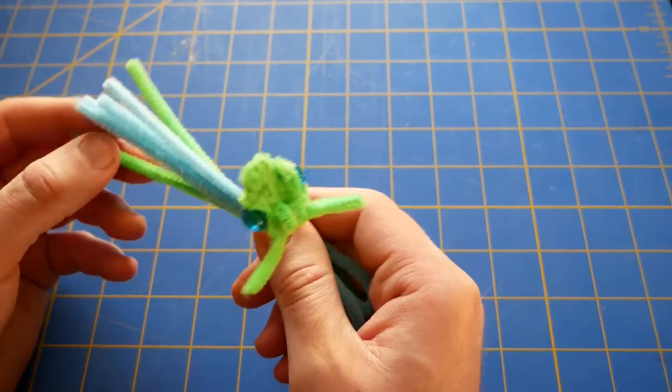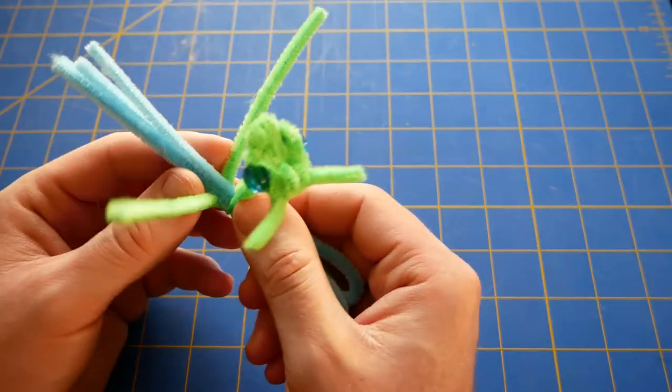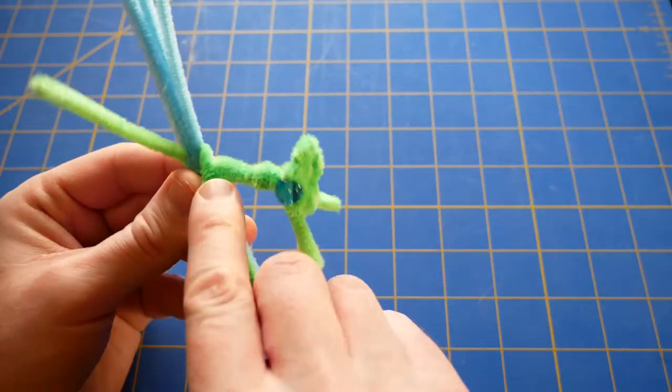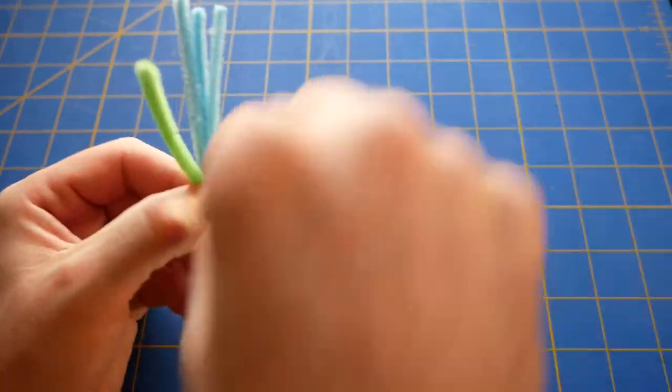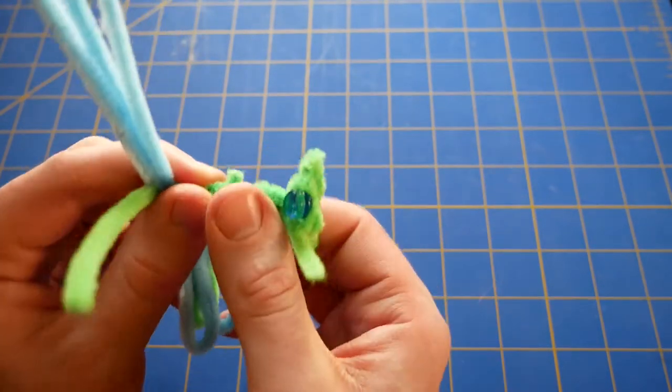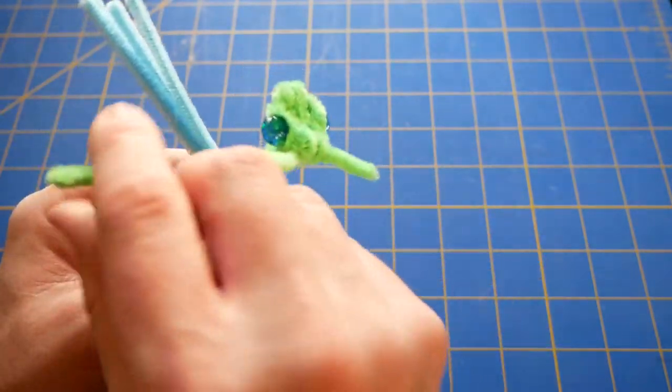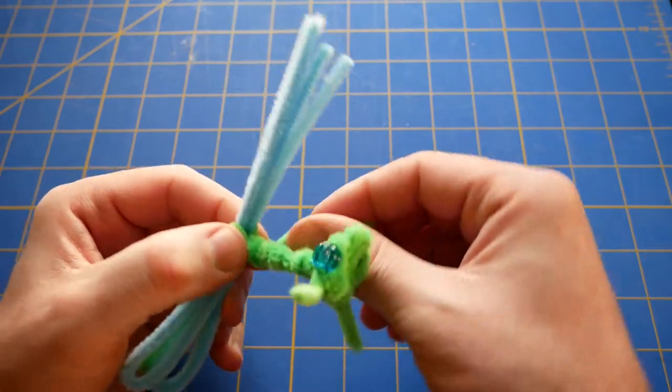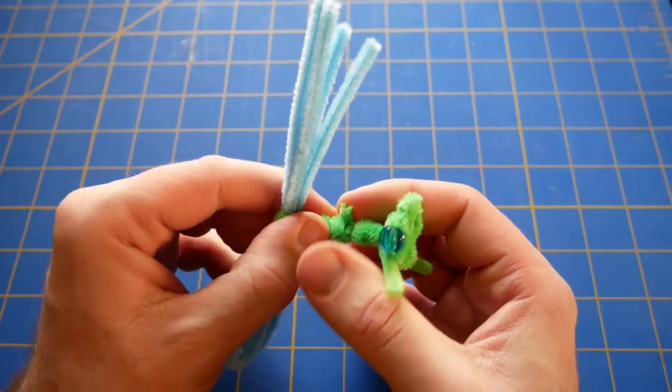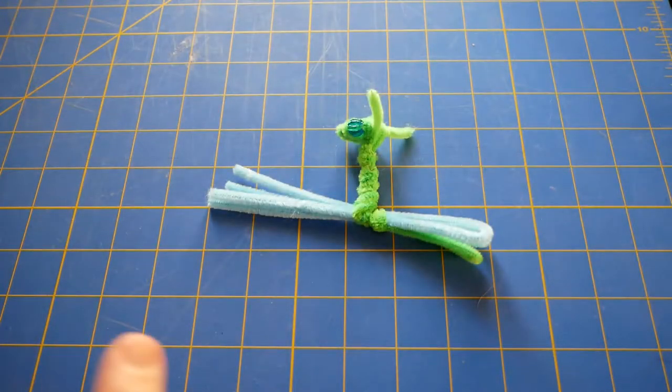Take the two green tails here and also wrap those around the neck area here to hold that together like that.